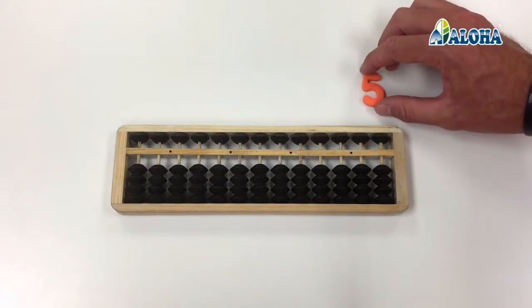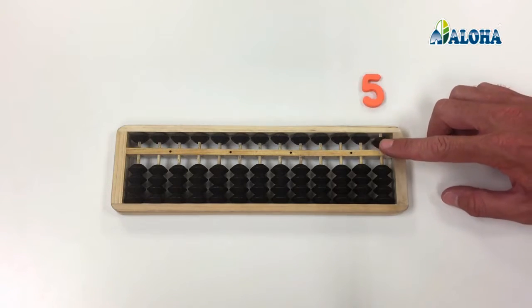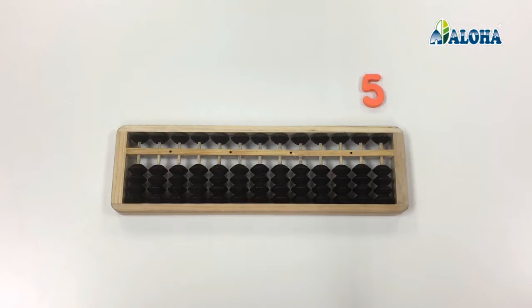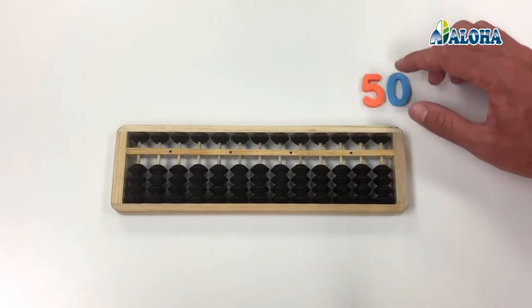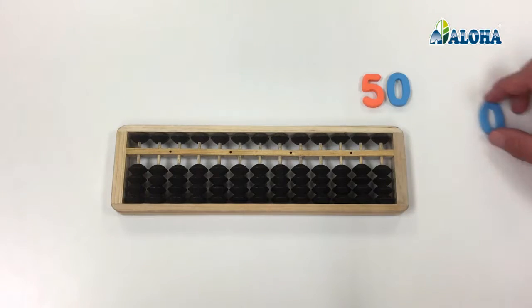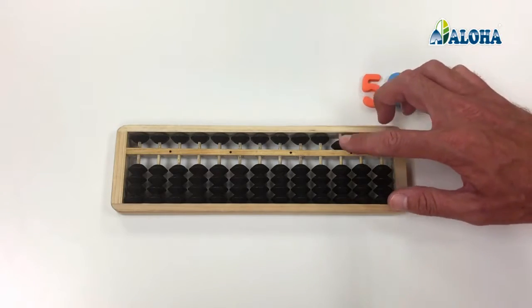The beads in the upper row work similarly, but are worth five times more. So the upper row of the first column is worth 5, the second 50, the third 500, and so on.